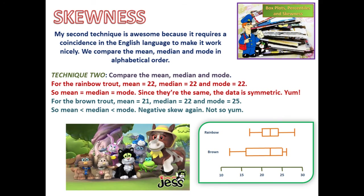My second technique is awesome because it requires a coincidence in the English language to make it work nicely. We compare the mean, median and mode in alphabetical order. Technique 2: compare the mean, median and mode. For the rainbow trout, the mean is 22, the median is 22 and the mode is 22. Since they're the same, the data is symmetric. Yum. For the brown trout, the mean is 21, the median is 22 and the mode is 25. So the mean is less than the median, which is less than the mode. Negative skew again. Not so yum.